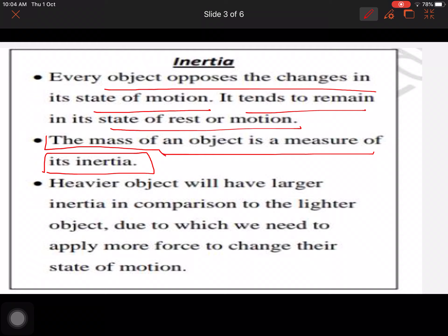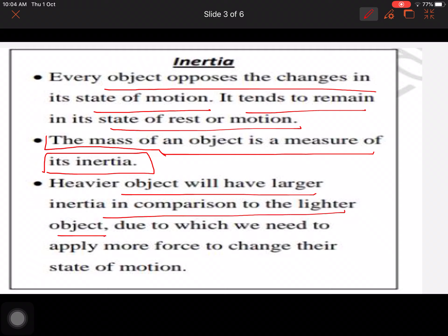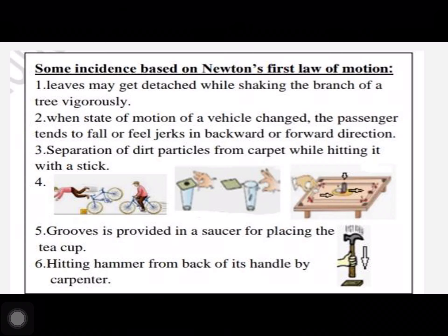The mass of an object is the measure of its inertia. Any object with higher mass will have higher inertia. For example, you can easily kick a football, but a stone of the same size cannot be kicked as easily. Heavier objects have larger inertia compared to lighter objects, and we need to apply more force to change their state of motion — the heavier the object, the more force required.